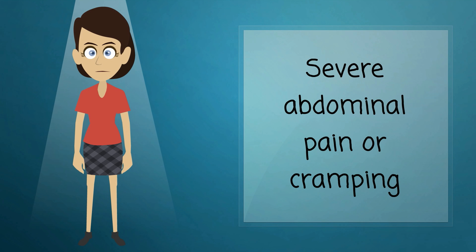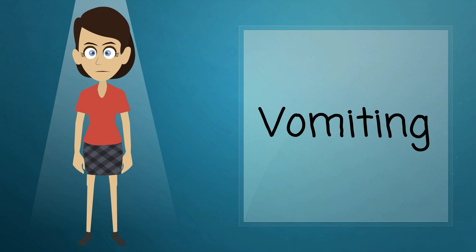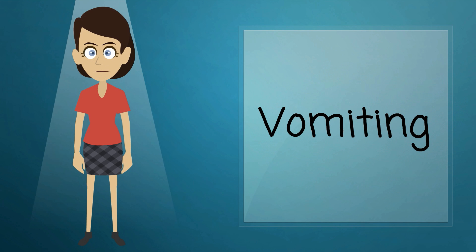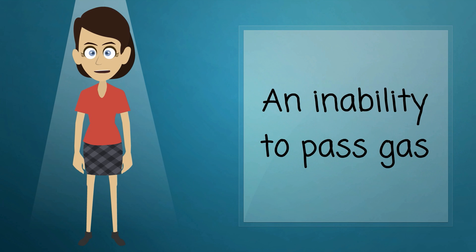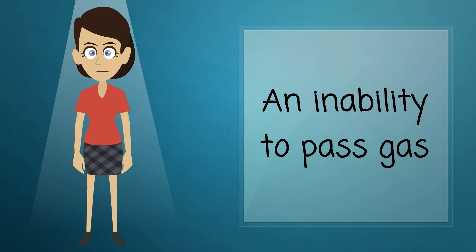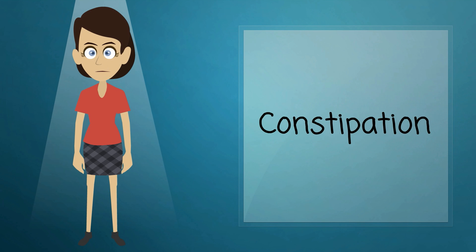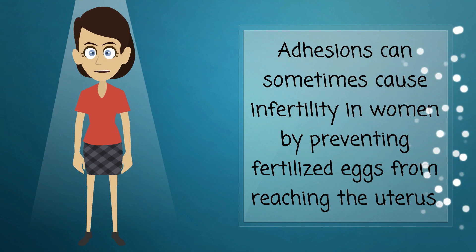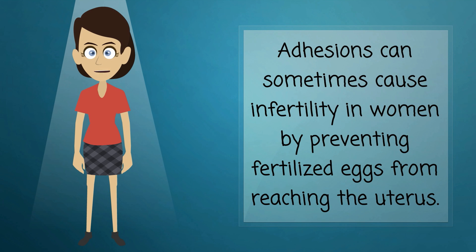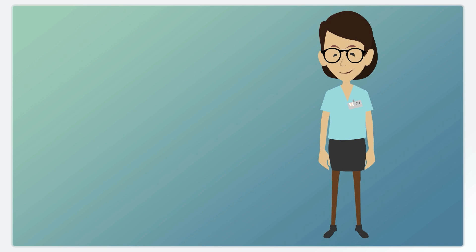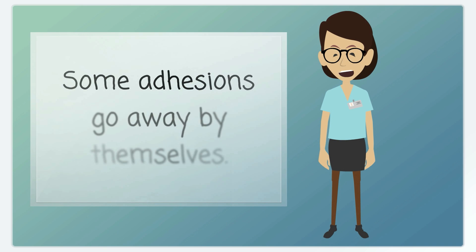When adhesions partly or completely block the intestines, they cause symptoms such as severe abdominal pain or cramping, vomiting, bloating, inability to pass gas, and constipation.